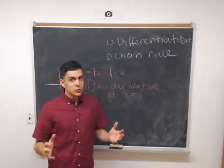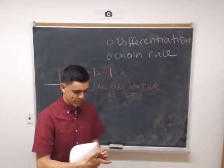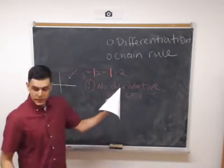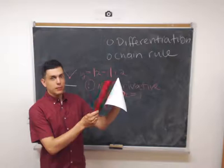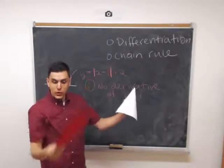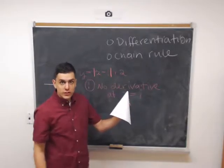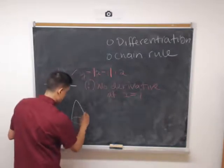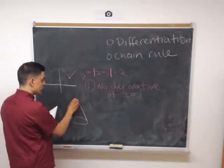This issue is much more subtle in multiple variables. So consider something like a cone in space. Here, we could have tangent planes at many, many points, but fail to have a tangent plane at the tip of the cone. In that sense, the cone would fail to be differentiable. So there's no derivative at this cone point here.